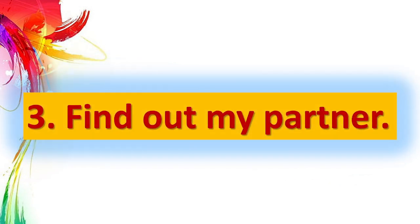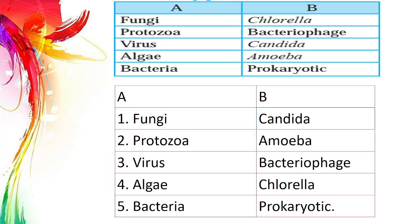Question 3: Find my partners. The answers are: Fungi – Candida; Protozoa – Amoeba; Virus – Bacteriophage; Algae – Chlorella; Bacteria – Prokaryotes.